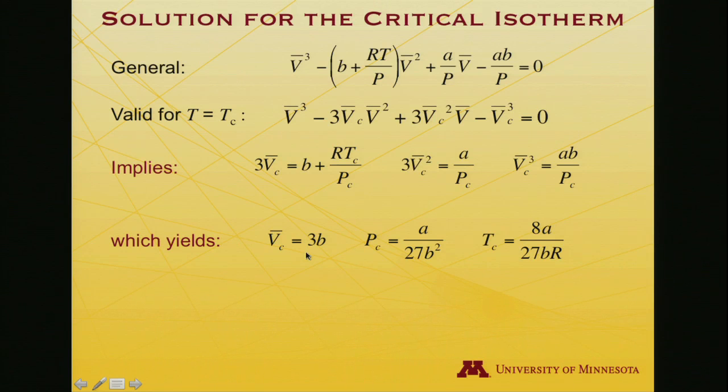The bottom line is the critical molar volume is 3 times B. The critical pressure is A over 27 V squared. And the critical temperature is 8A over 27 times B times the universal gas constant.